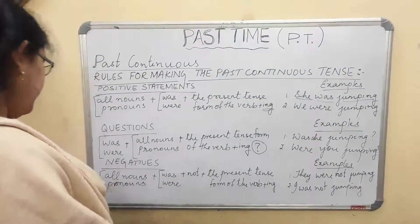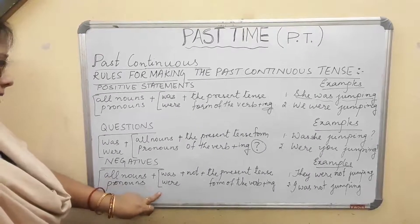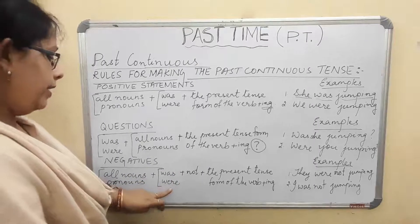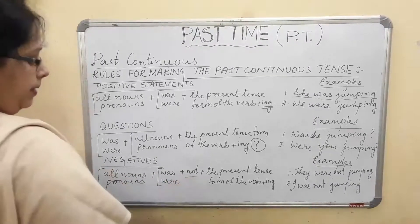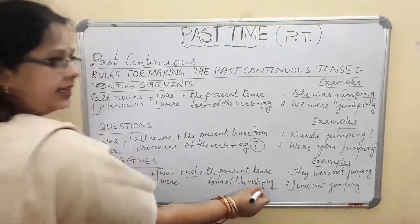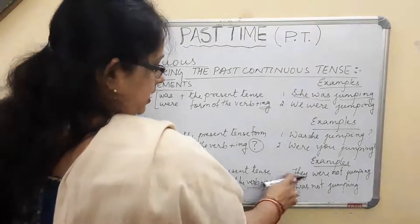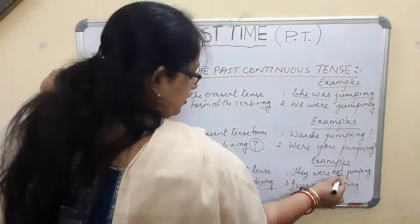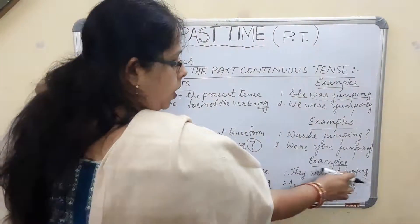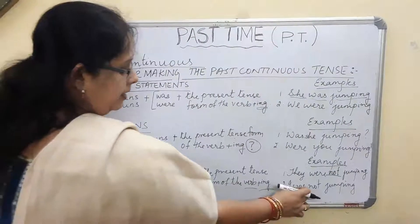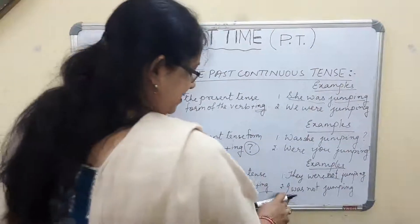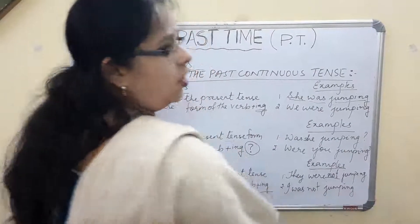For the negative form, the structure is: all nouns or pronouns plus 'was' or 'were' — 'was' for singular and 'were' for plural — plus 'not', plus the present tense form of the verb plus '-ing'. For example: 'They were not jumping.' Or: 'I was not jumping.'